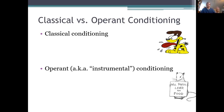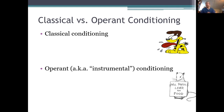They both involve a lot of the same processes too, like acquisition, extinction, generalization, and discrimination. We could talk about that stuff with operant conditioning, just like we did with classical conditioning. And they both involve learning to associate things, which is why they're both forms of conditioning.